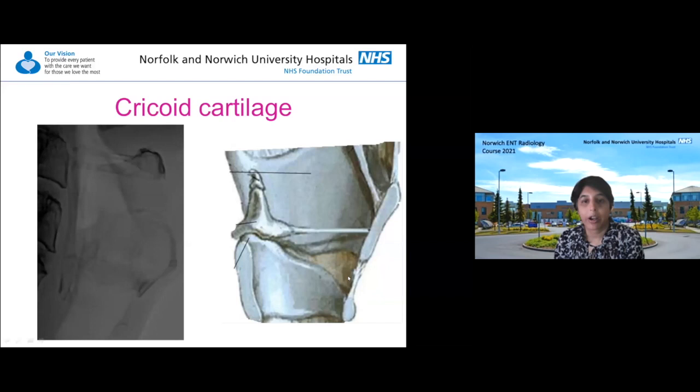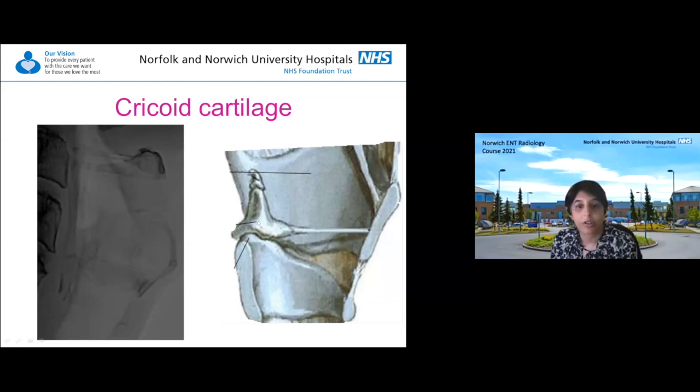The thyroid cartilage has a superior cornu and inferior cornu, and the inferior cornu connects to the cricoid cartilage by the cricothyroid membrane. The cricoid cartilage is the only cartilage that encircles the larynx, and the arytenoid cartilages just sit on top of it.